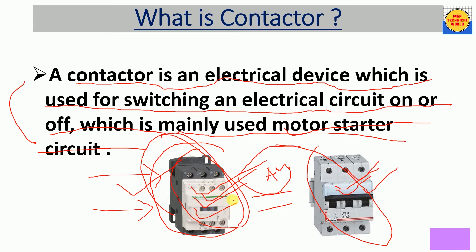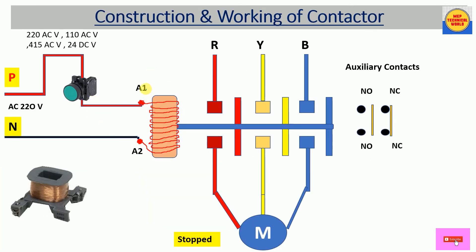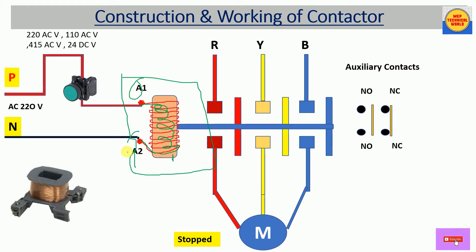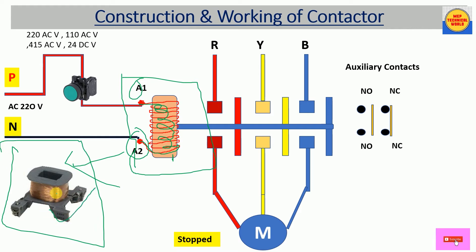Now let's move to the construction and working of this contactor. If we talk about the construction of a contactor, it has a main part which is the contactor coil. This is the iron core, and over it we have a copper coil winding. Here we have two terminals of this contactor coil — one is A1 and another is A2. We can connect the power supply as per the contactor rating.